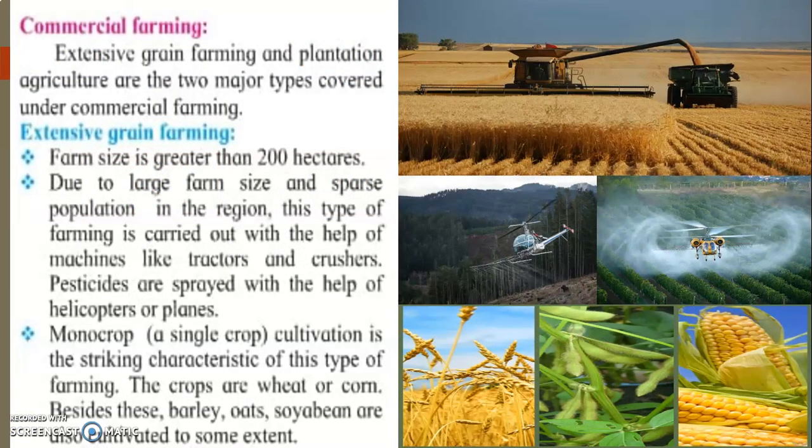The two major types of commercial farming are extensive grain farming and plantation farming — remember this for exam questions. If you write horticulture or market gardening, that will be wrong for this answer. Similarly, the two traditional methods of farming are intensive farming and shifting cultivation. Read carefully and understand the difference.